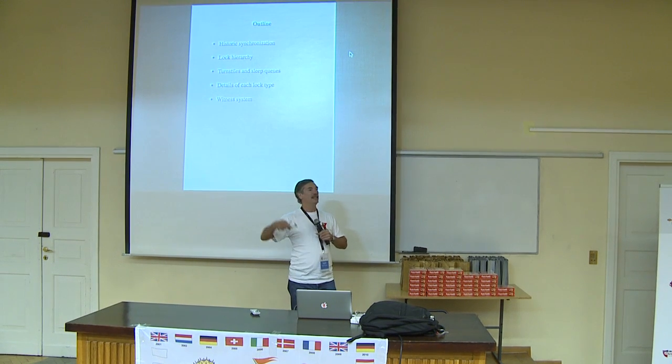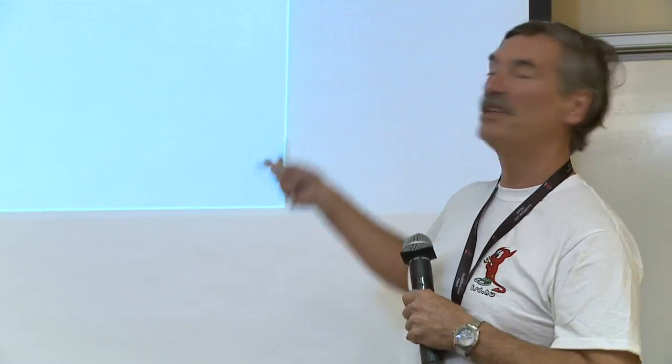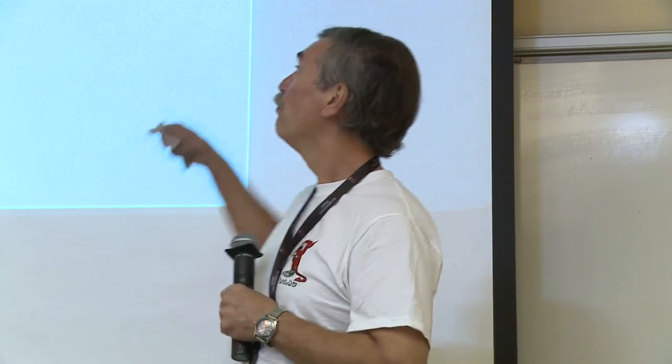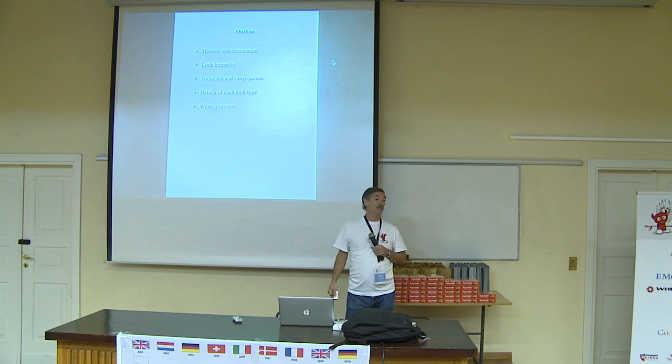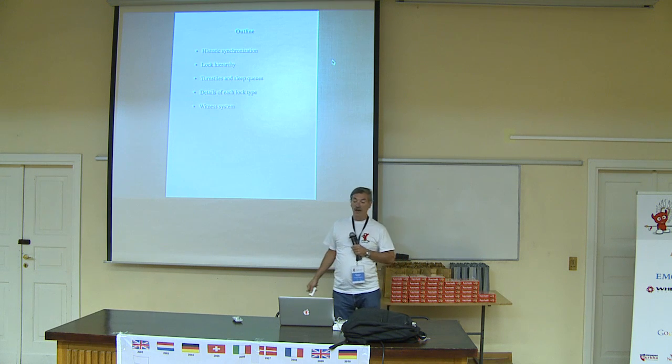I'm going to start by giving you a talk about how we historically did synchronization — back in the dark ages before many of you were born, when dinosaurs and mainframes ruled the earth. We'll then move into the modern age, go through turnstiles and sleep cues — the underlying mechanism we use to implement locks — then detail each type of lock in the system, and motivate why we need about eight different ways of doing locking. Finally, we'll talk about the witness system, which is the mechanism we use to avoid deadlocks.